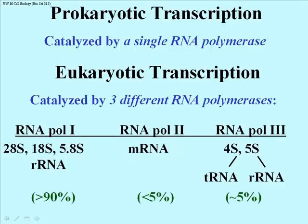More than 90% of a cell's RNA is ribosomal RNA. Less than 5% — sometimes less than 1% — is messenger RNA, and transfer RNA together with 5S ribosomal RNA together probably make up the remaining roughly 5%.